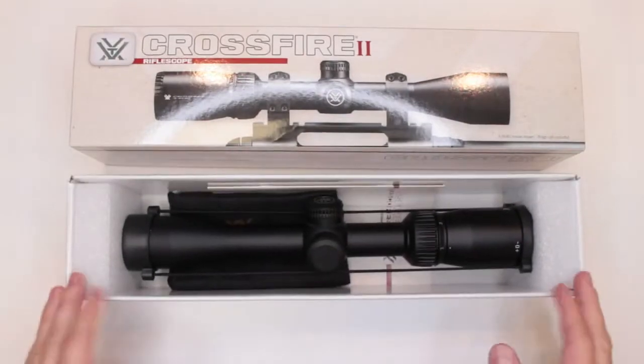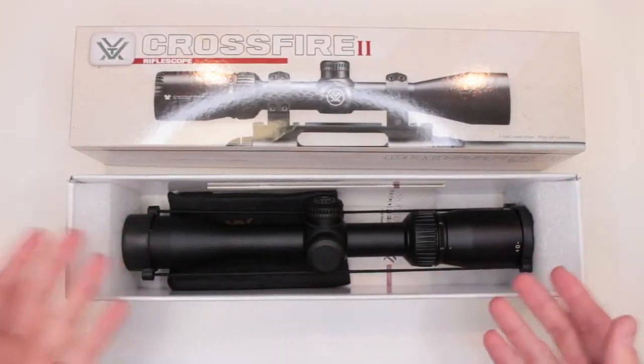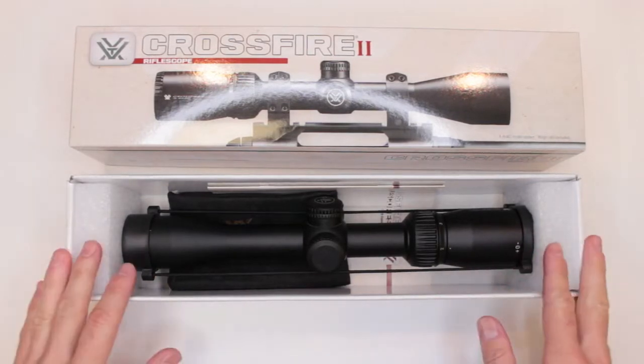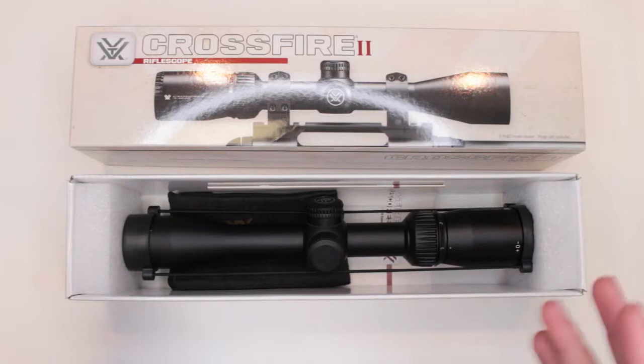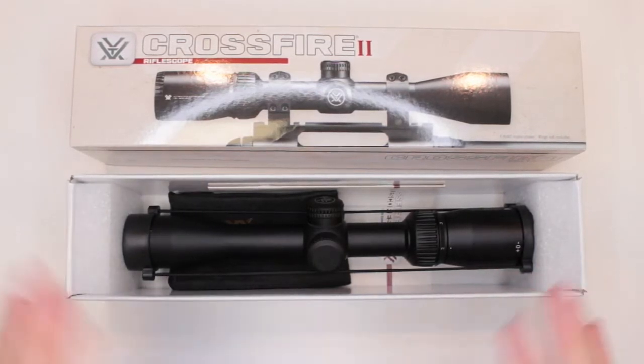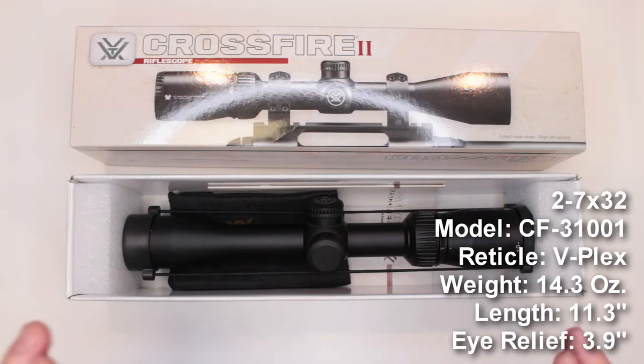This particular model, as you know, you probably already checked on Amazon. If you didn't, the link is in the description below. There are a lot of different models of this rifle scope and I think it's great, really good versatility. Now this particular model is 2 to 7 by 32.